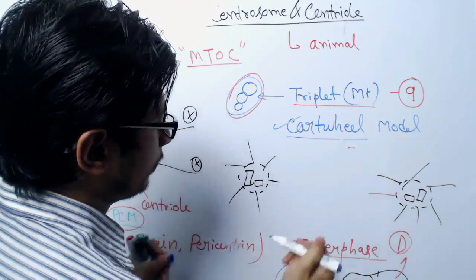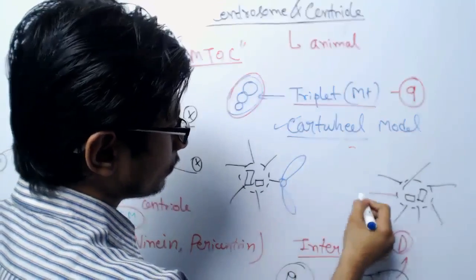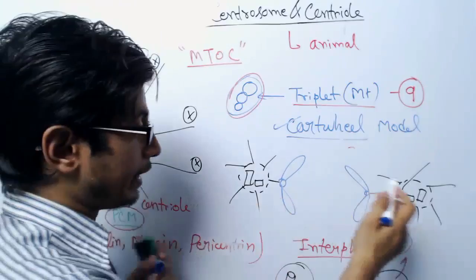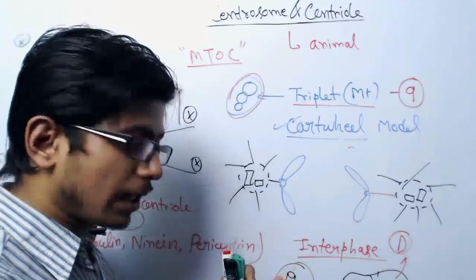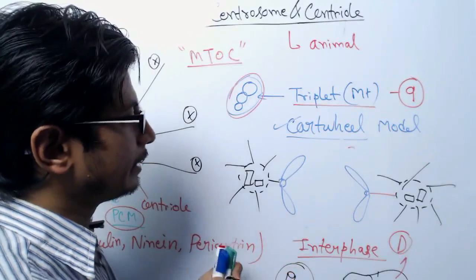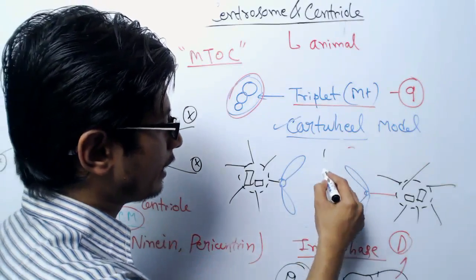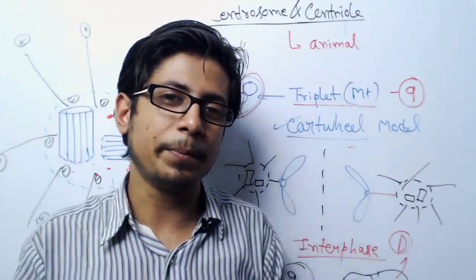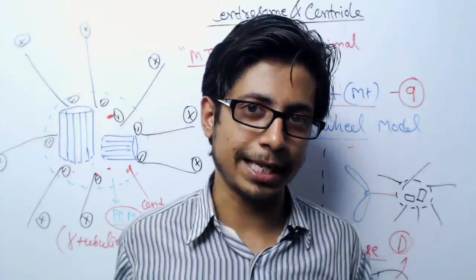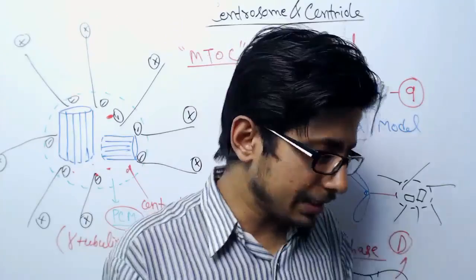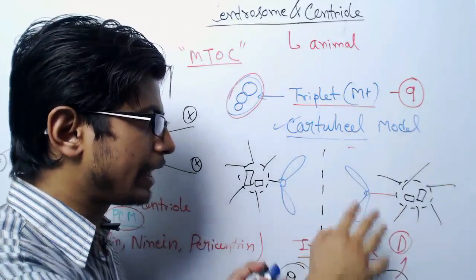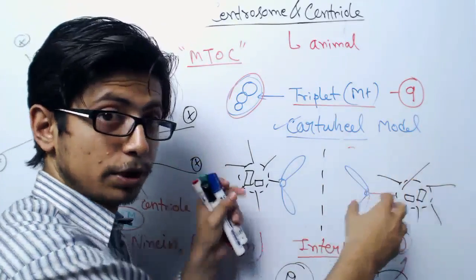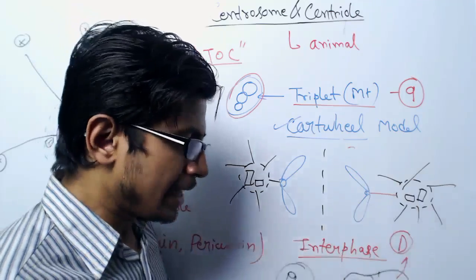After chromosome separation is complete, cytokinesis occurs — the division of the cytosol and separation of the cell into two daughter cells. This is the full idea of cell division, and that is why two centrosomes at opposite poles are required.